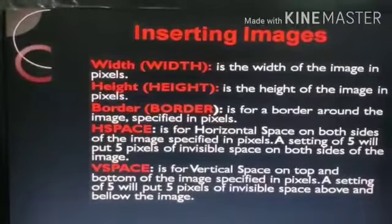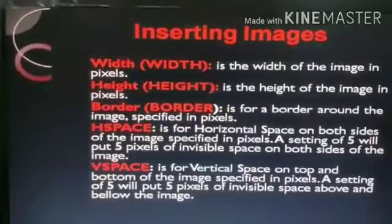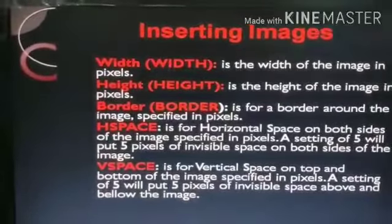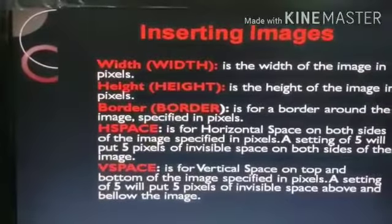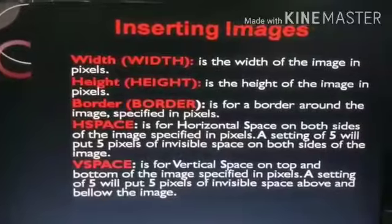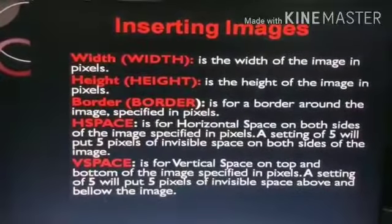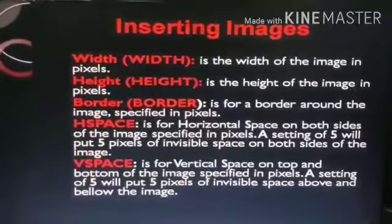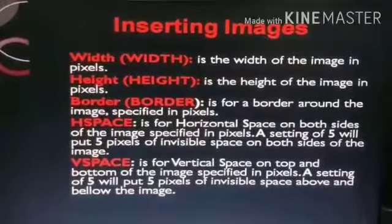Next are hspace and vspace — horizontal space and vertical space. यह जो attributes हैं, on both sides of the image, it specifies values in pixel. Image से horizontally में कितना space होना चाहिए या vertically से कितना space होना चाहिए, उसके लिए हम लोग hspace और vspace attribute का इस्तेमाल करते हैं.